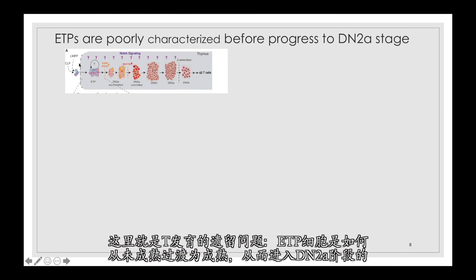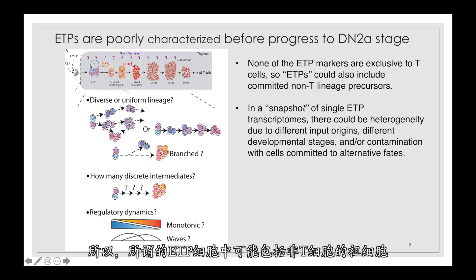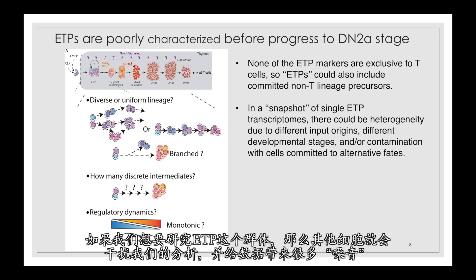A remaining question is how the ETP transitions from immature to mature and then enters the DN2A stage. According to current knowledge, none of the ETP markers are exclusive to T cells. Therefore, the so-called ETP population could also include committed non-T lineage precursors. When we use these markers to isolate ETP cells, we might also isolate non-T cell lineage cells that contaminate the ETP population, disrupting cell fate studies and introducing noise into the final data.